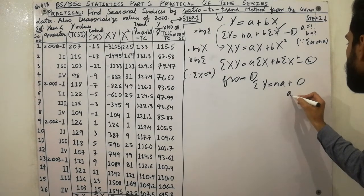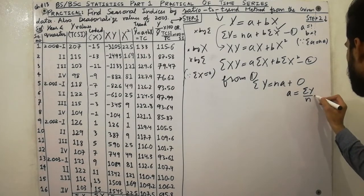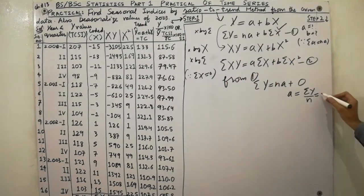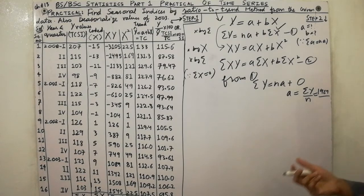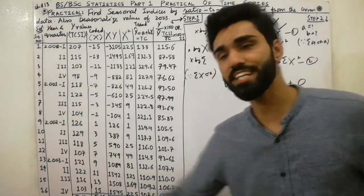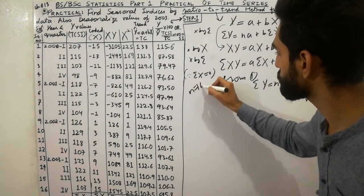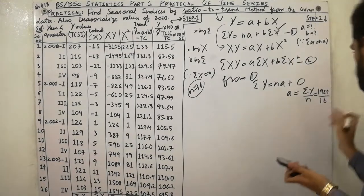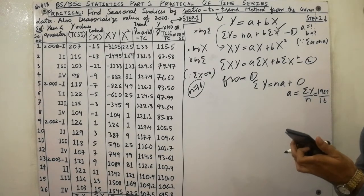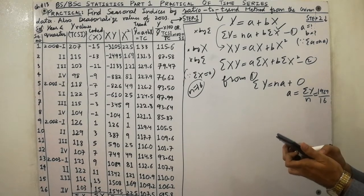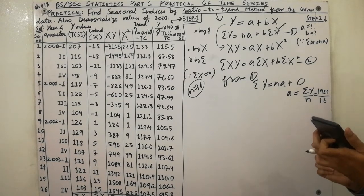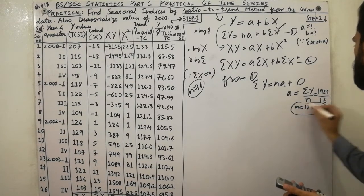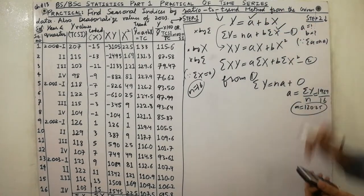From the first equation, a is equal to Σy divided by n. Σy is given here as 1924, and the number of values n is 16. So a equals 1924 divided by 16, which gives us 120.25.